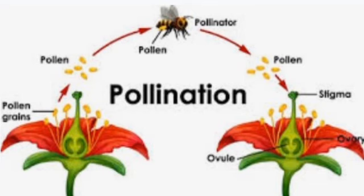Pollination: After maturity, the anther bursts and the pollen grains released fall on the stigma; this process is called pollination. Pollination is the transfer of pollen from the male part of a plant to the female part of a plant, enabling fertilization and the production of seeds, most often carried by animals or wind. The pollen grains released from the anther fall on the stigma of another flower.